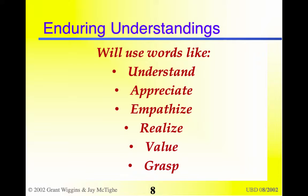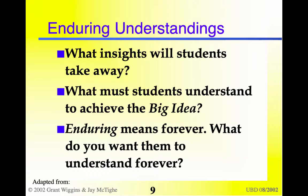Enduring understandings are those deep changes — attitudes and emotions — that we want students to change, but we're not going to be testing them. They're too big to test. Things like ethical stances and opinions and things that really affect the kinds of people our students will be. When we write the enduring understandings, we will use words like: students will understand, they will appreciate, they will empathize, they will realize, they will come to value, they will grasp. These are the kinds of verbs we use to state that deep understanding that we want students to aim for.